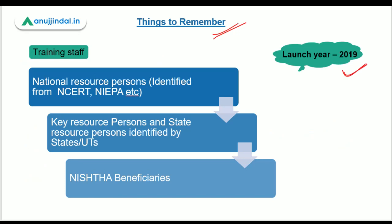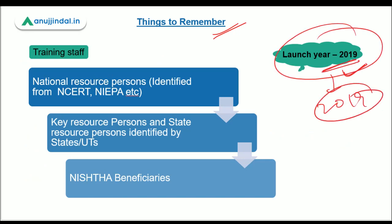Now the important things to remember: the launch year of this scheme is 2019 — this is very important as launch year is frequently asked. Regarding the training staff structure: at the national level, National Resource Persons (NRPs) are identified from NCERT or NIEPA (National Institute of Educational Planning and Administration). These NRPs train Key Resource Persons (KRPs) and State Resource Persons (SRPs), who are identified by their respective states or UTs. In turn, these KRPs and SRPs provide training to the NISHTHA beneficiaries.